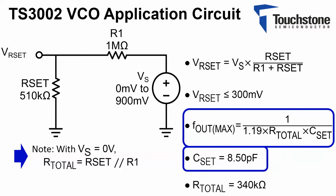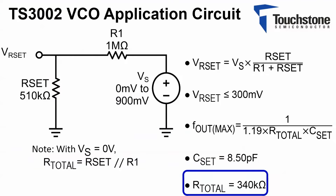By setting the CSET capacitor equal to 8.5 pF and using a maximum frequency of 290 kHz, the equivalent R total is approximately equal to 340 kΩ.